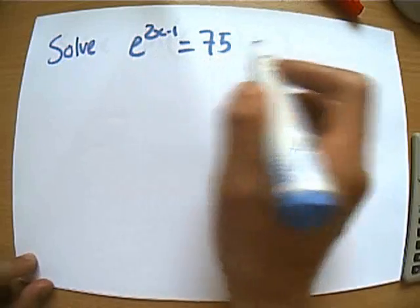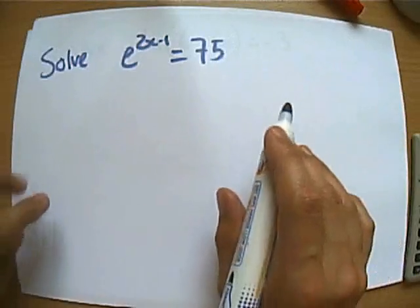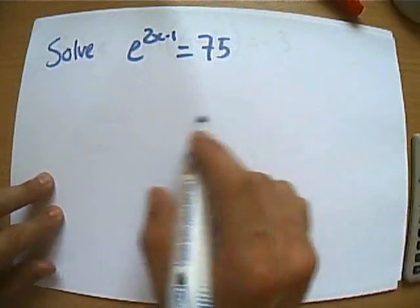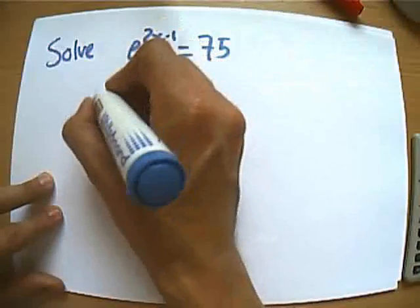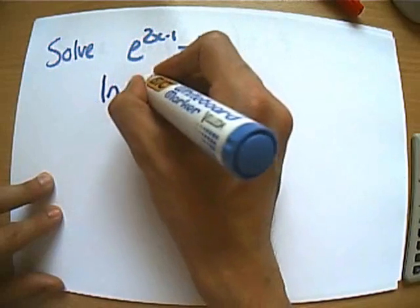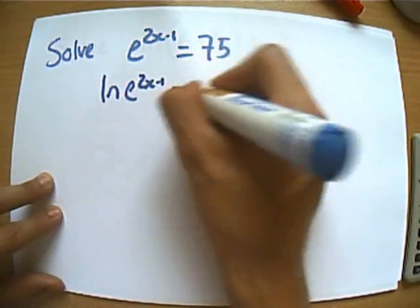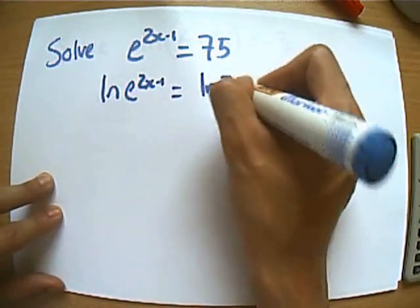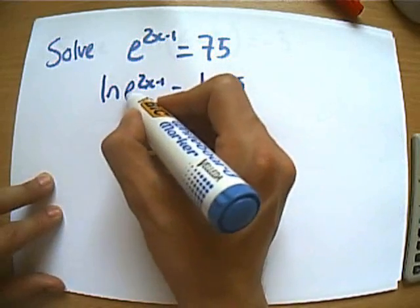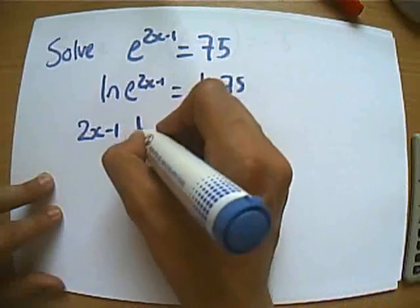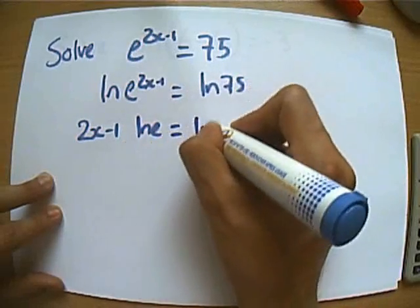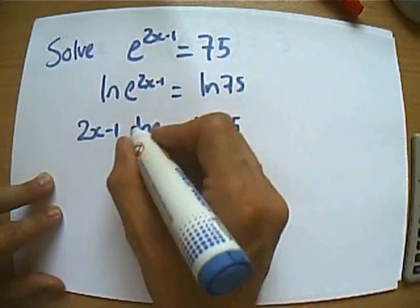So our answer is just quite simply ln of 6.2, nice and simple. Let's try a slightly more interesting example. e to the power of 2x minus 1 equals 75. Just as before, let's take logs of both sides, and in this case to make it easy, let's take logs base e or ln of both sides, all straightforward so far.